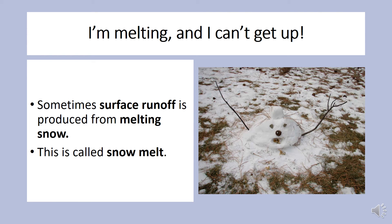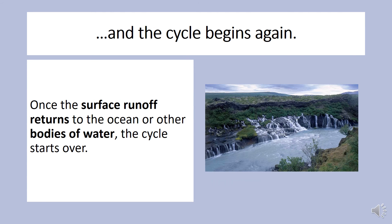Sometimes surface runoff is produced from melting snow. When this happens, it's called snowmelt. Once the surface runoff returns to the ocean or other bodies of water, the cycle starts over.